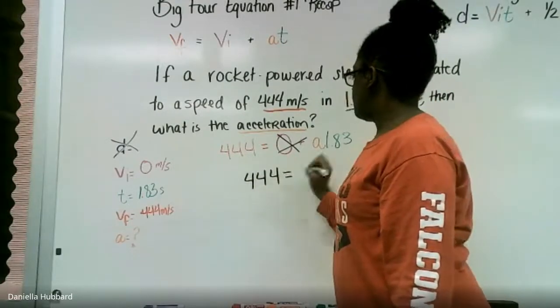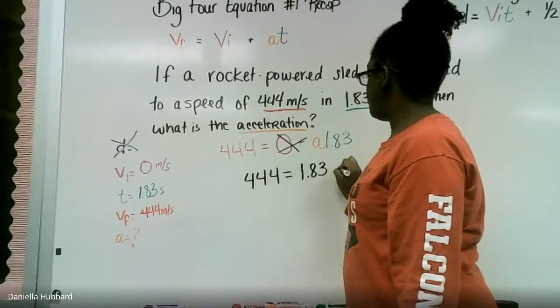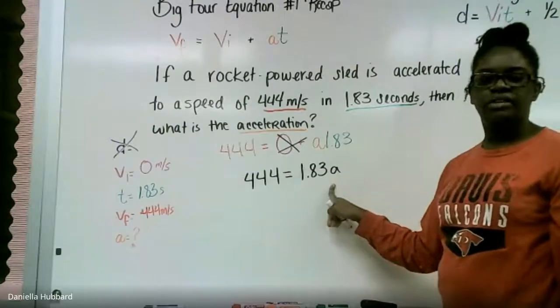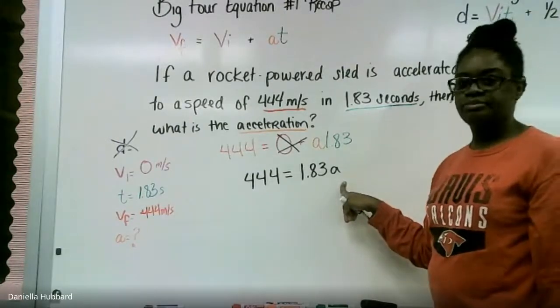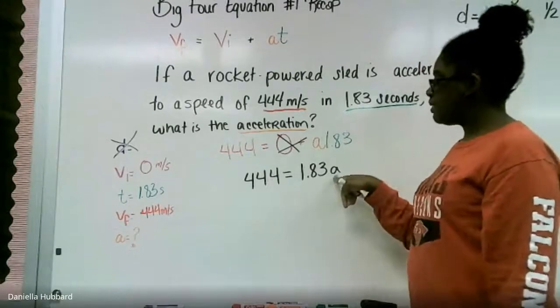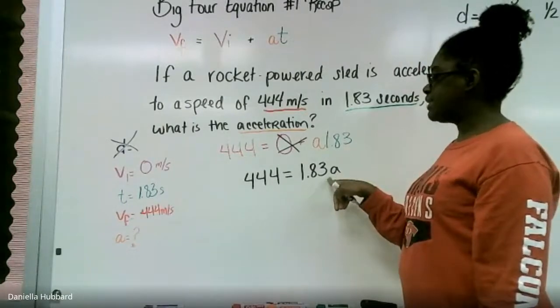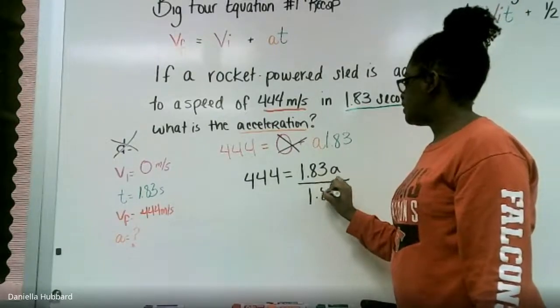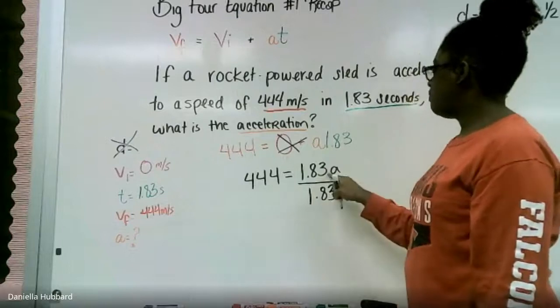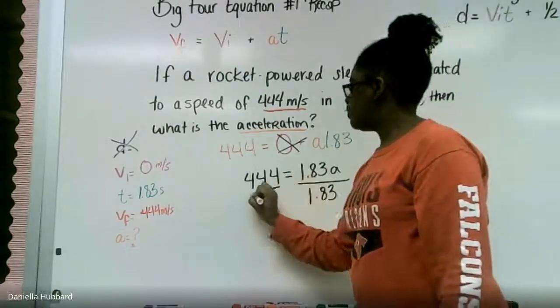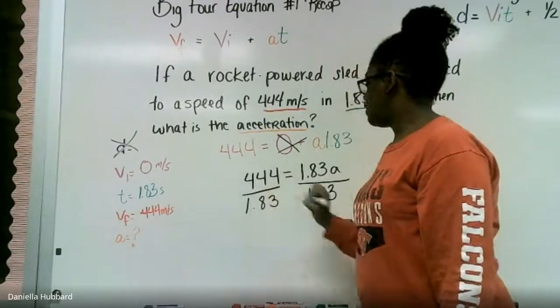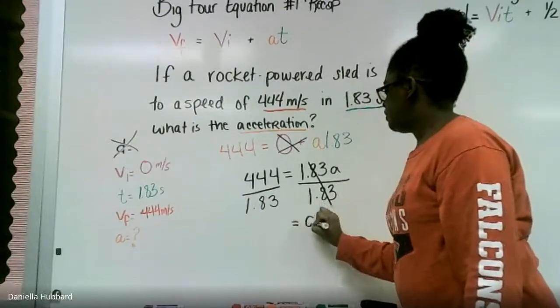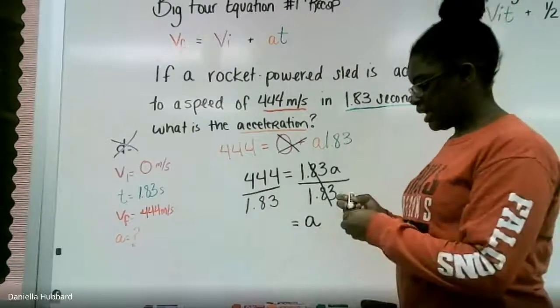So now we're left with 444 equals 1.83 times a. I just switched it because I'm used to having my number in front of the variable; it still means the same thing. Since we are multiplying 1.83 times a, in order to get rid of it we have to do the opposite operation. Opposite of multiplication is division. What you do to one side, you do to the other. This gives us one, and we don't put ones, so we just leave it as a.